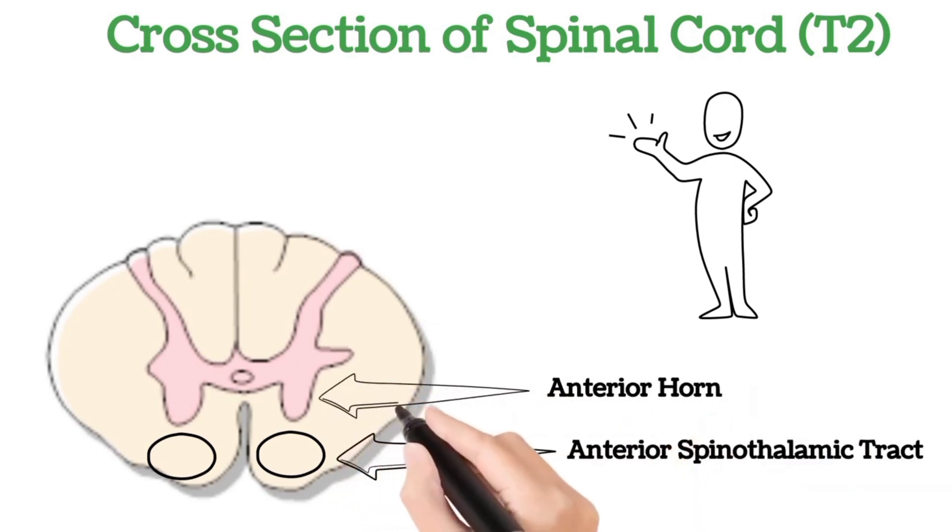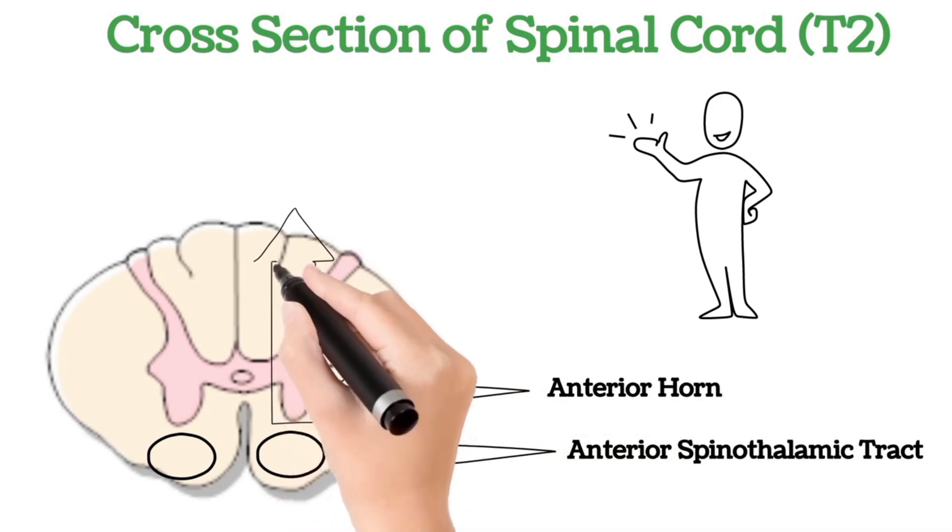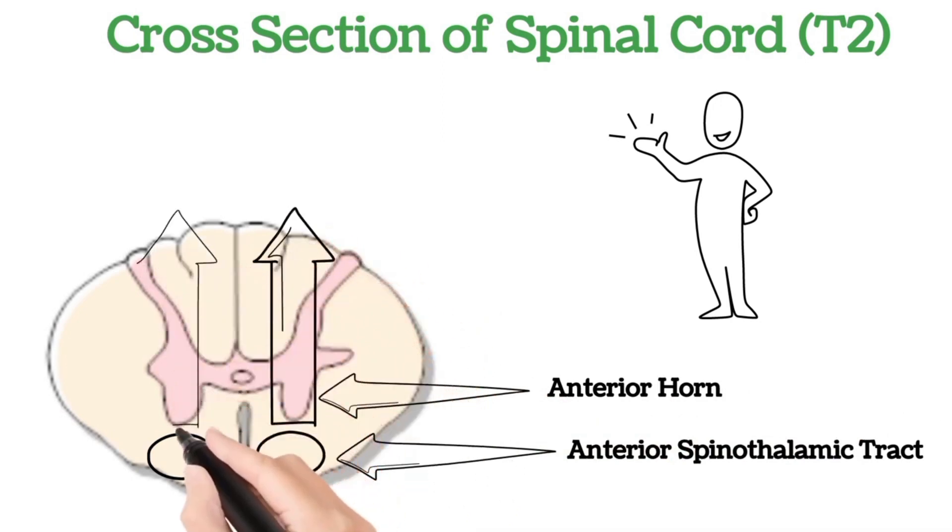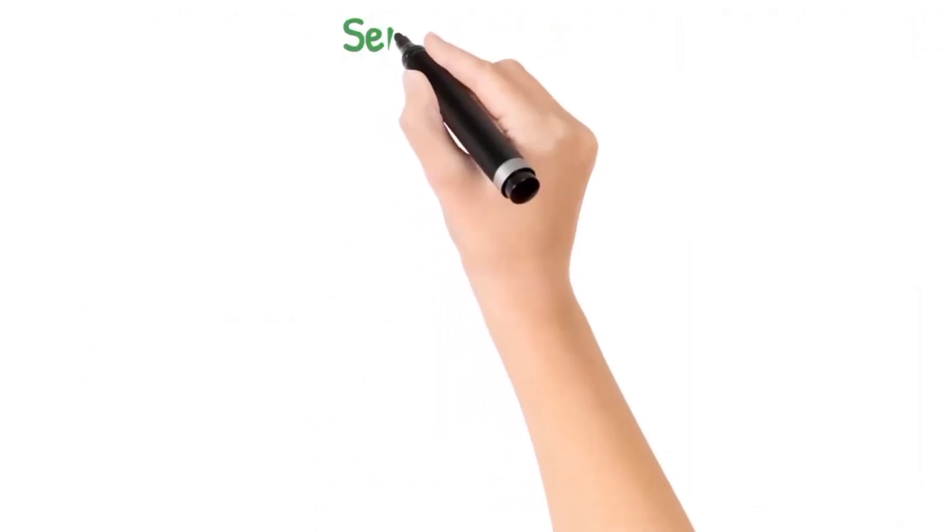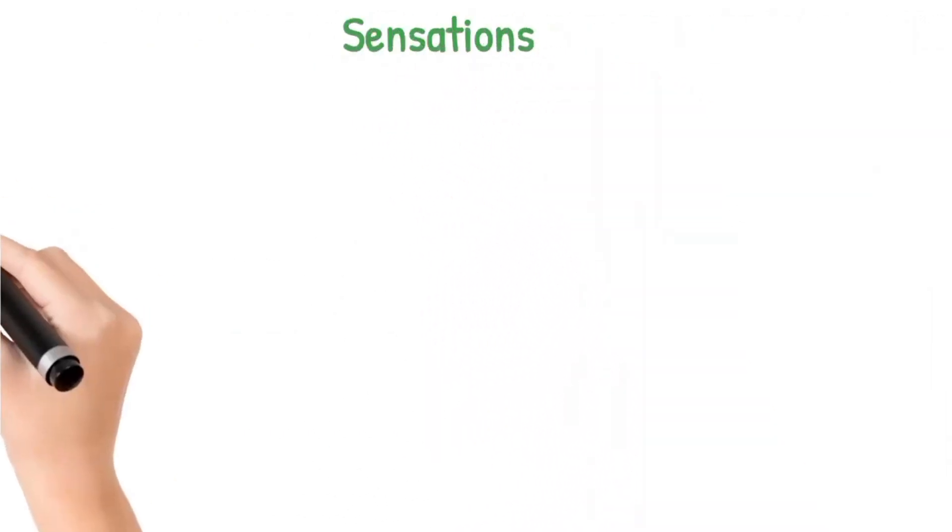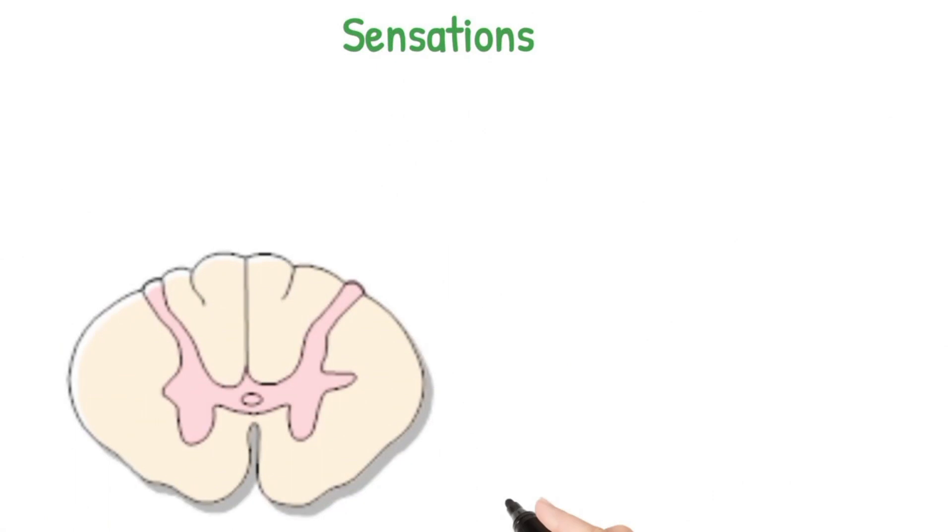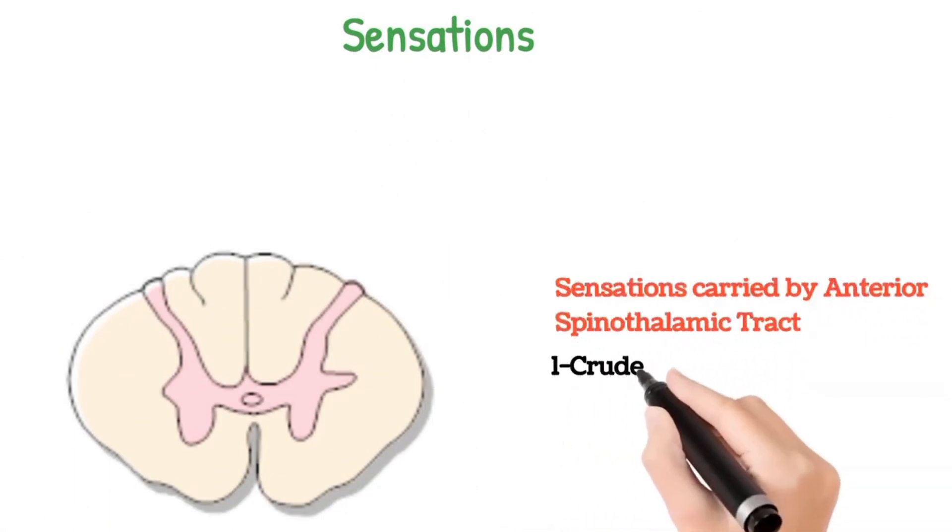These fibers carry sensations ascending upward toward the brain. The sensations carried by the anterior spinothalamic tract are number one, crude touch, and two, pressure.